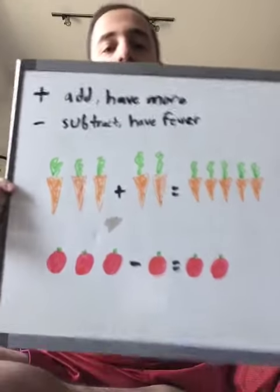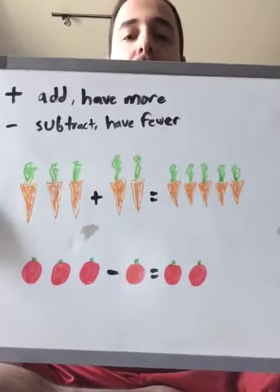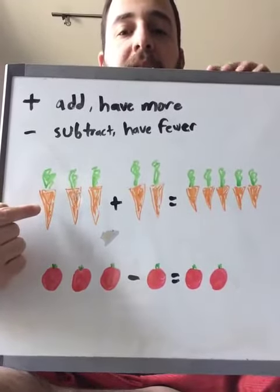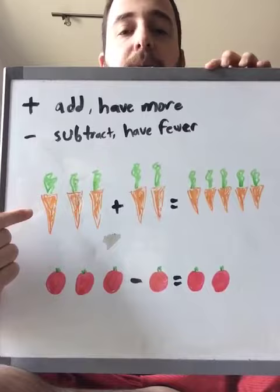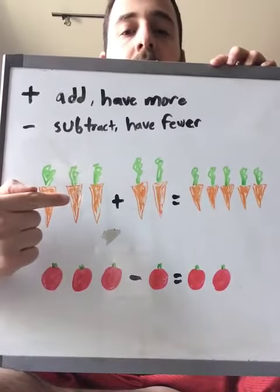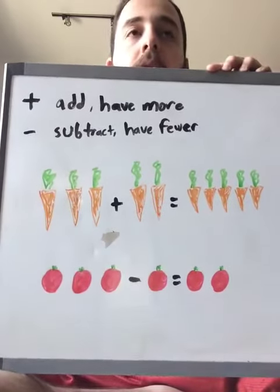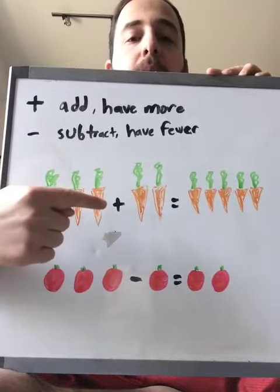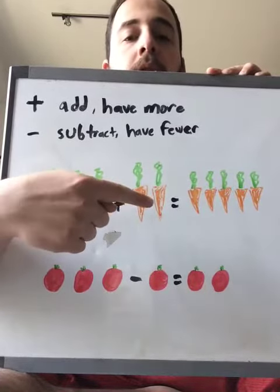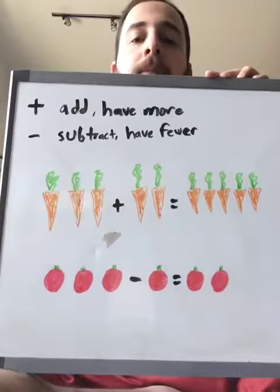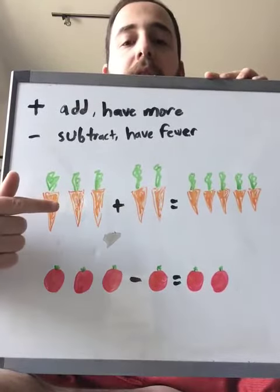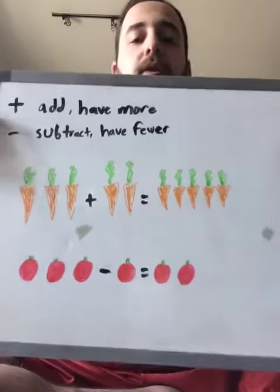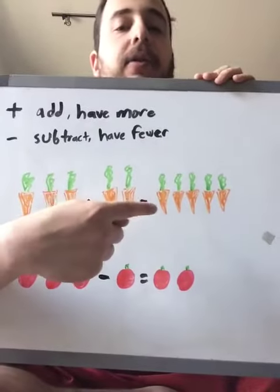So let's look at some vegetables to help us add and subtract. Let's count how many carrots we have here. One, two, three. Awesome. So if we have three carrots and we add one, two, three carrots adding two carrots, equals how many do you think?